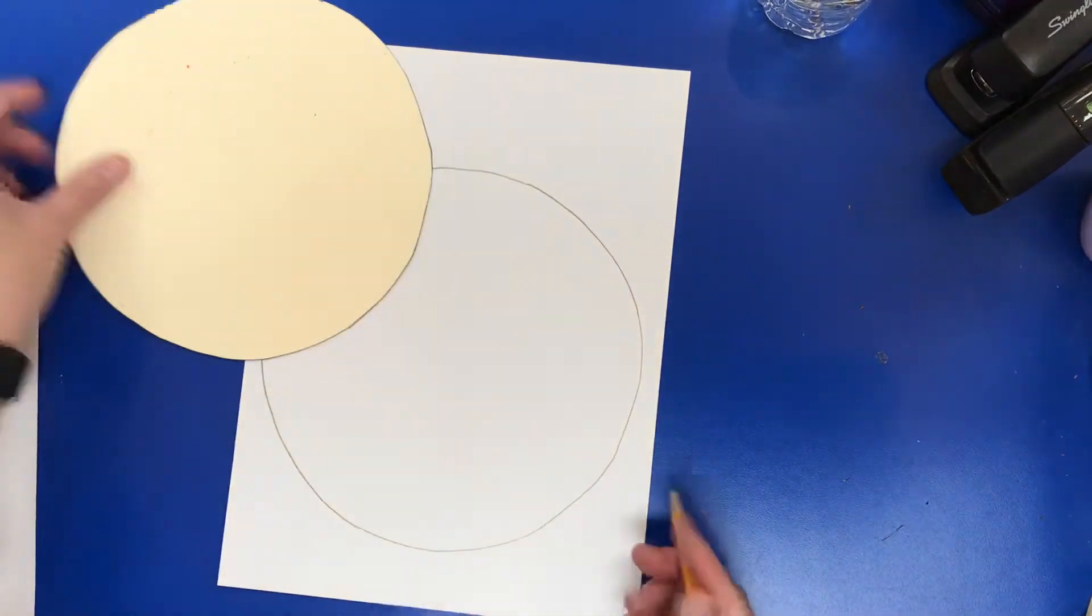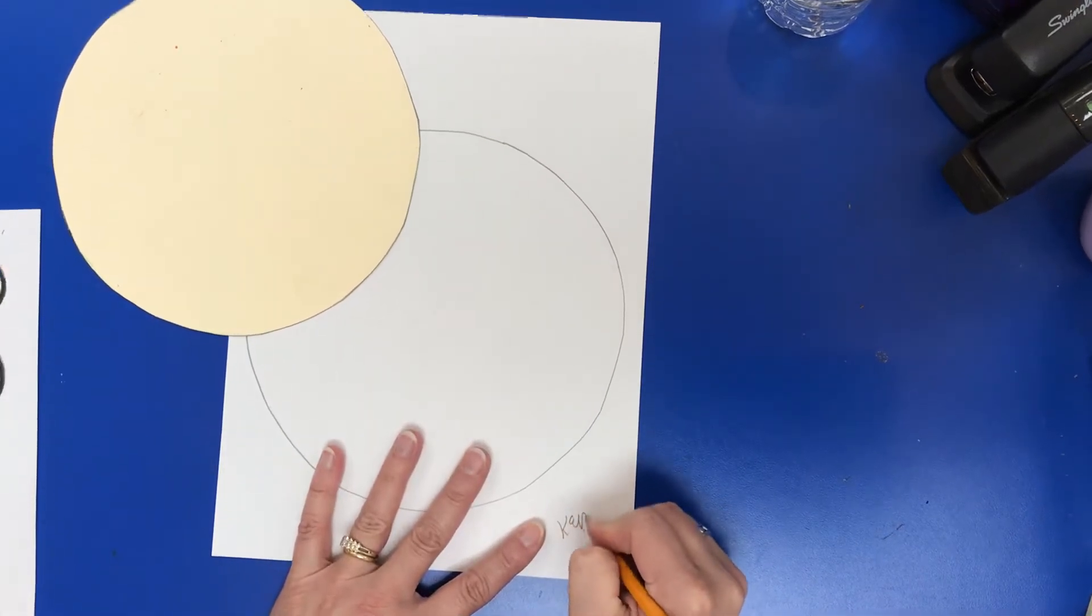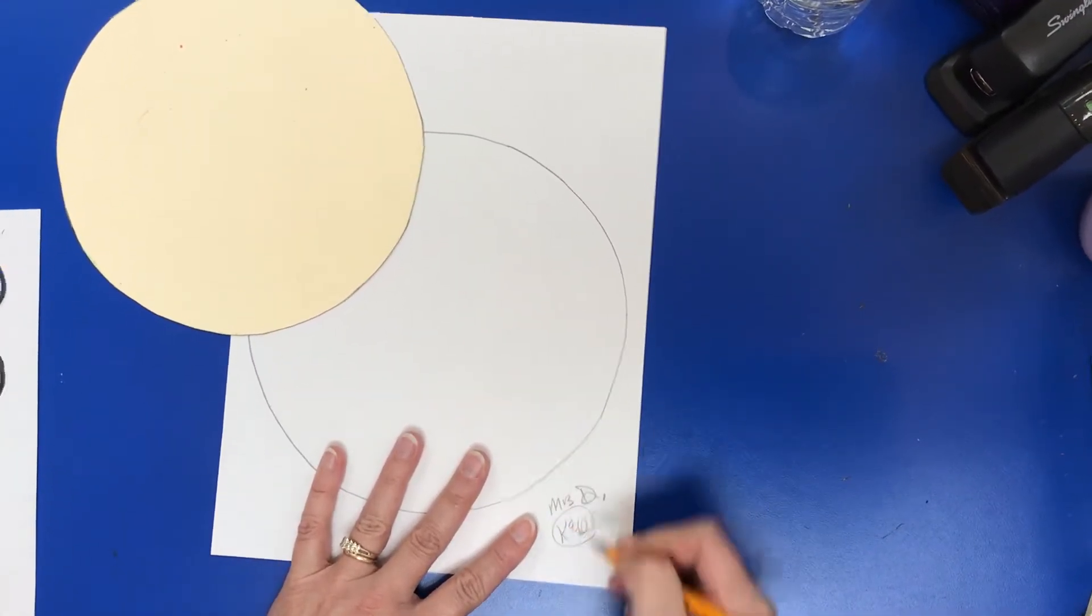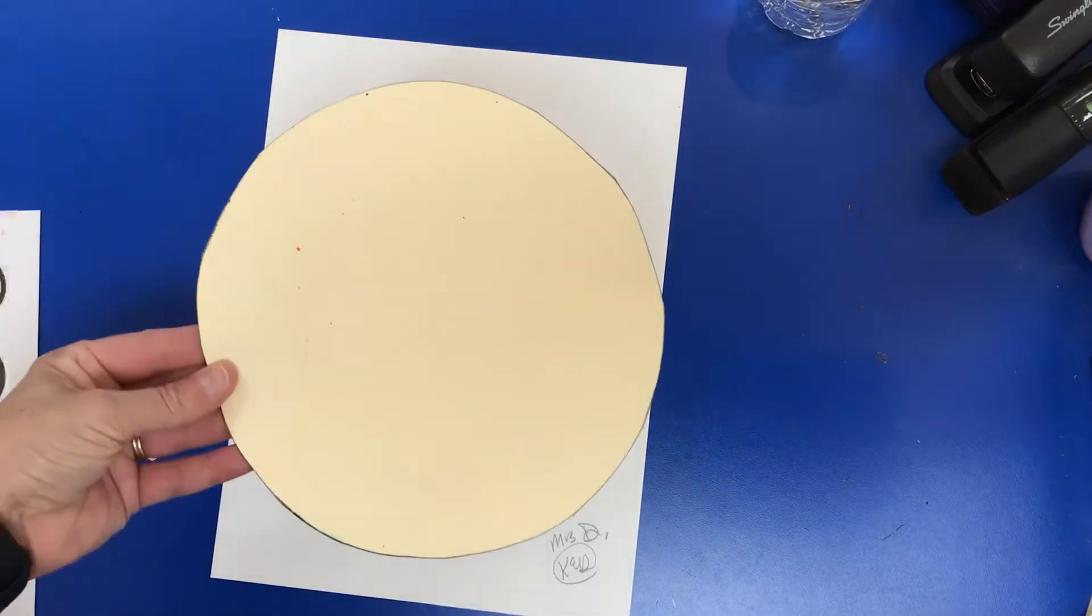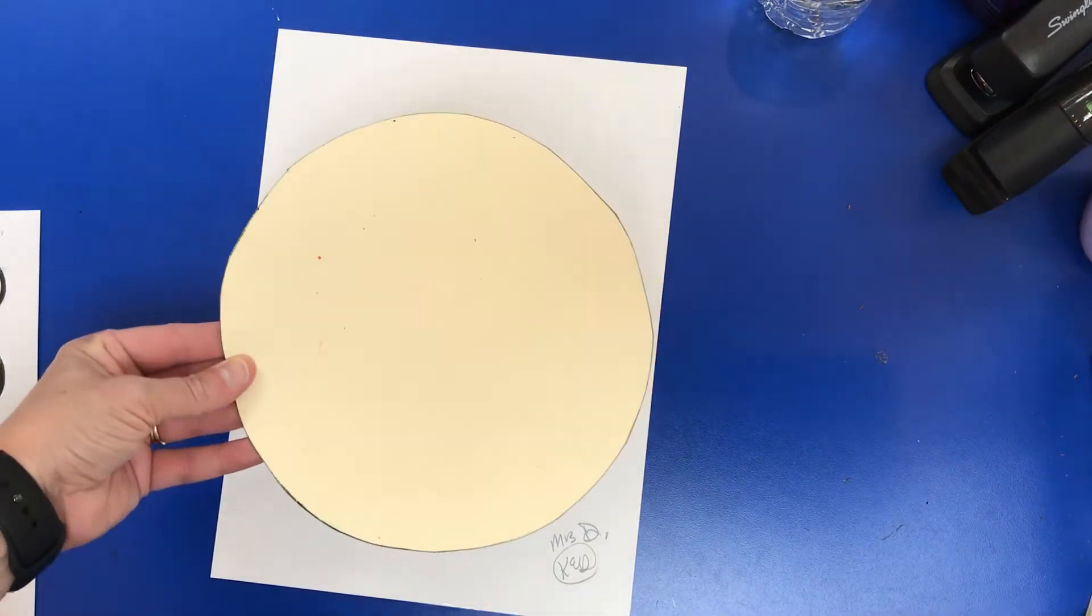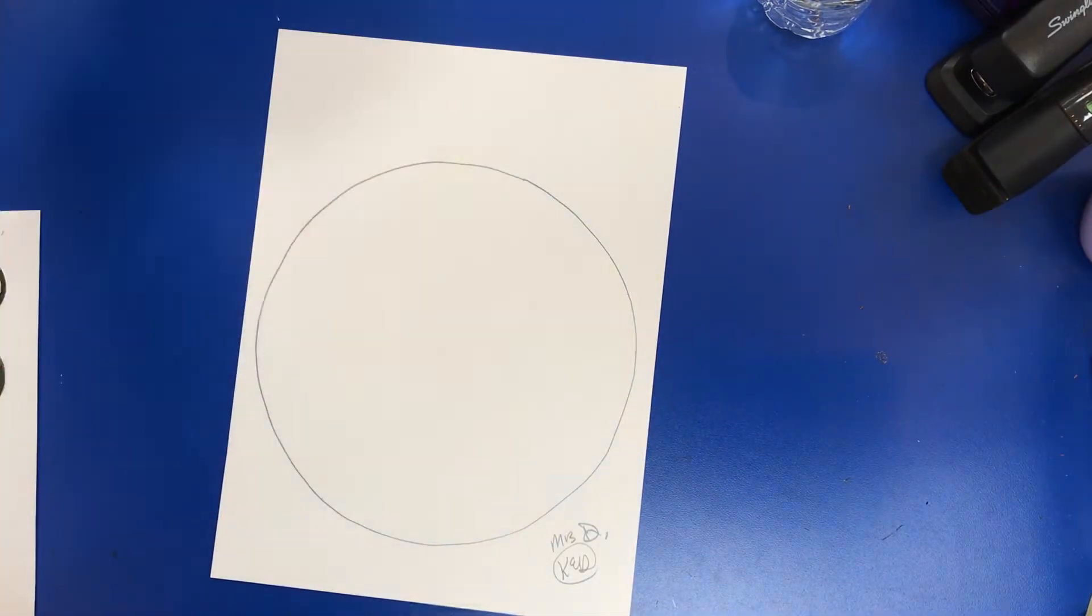Make sure your name is on your paper, then return the circle back up to Mrs. D's desk.